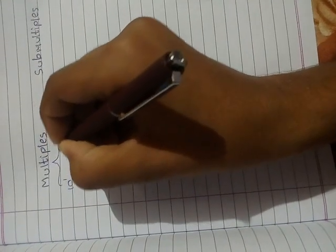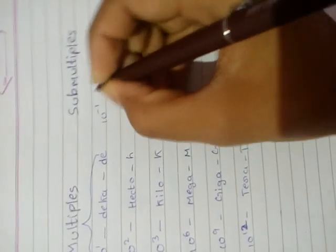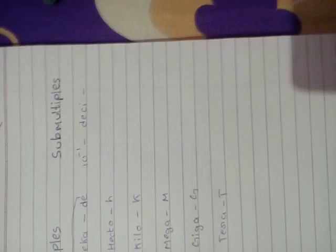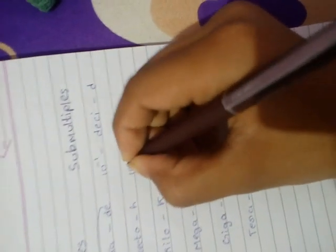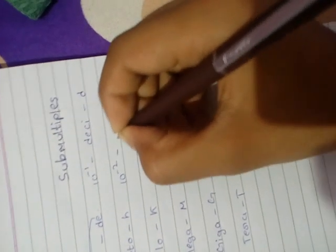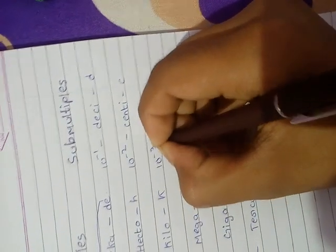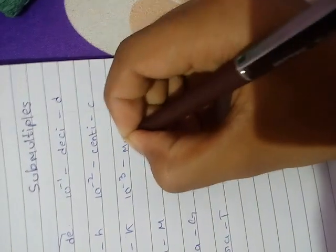These all are multiples. Now I want to show you what are sub-multiples. 10 to the power of minus 1 is called deci, its symbol is small D. 10 to the power of minus 2 is called centi, its symbol is C. 10 to the power of minus 3 is called milli, its symbol is small M.